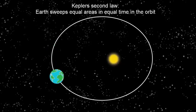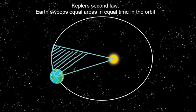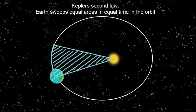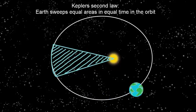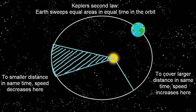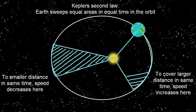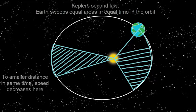In his second law, Kepler also said that the earth sweeps equal areas in the sun's orbit in equal time. It means that to cover equal areas in the same interval of time, when earth is far from the sun, it has to travel more distance than when it was closer.